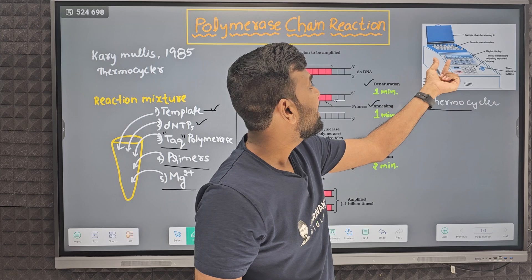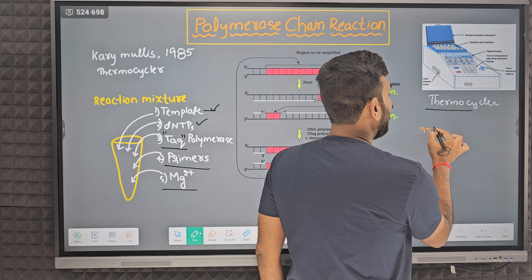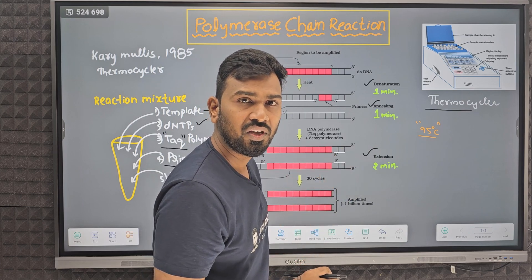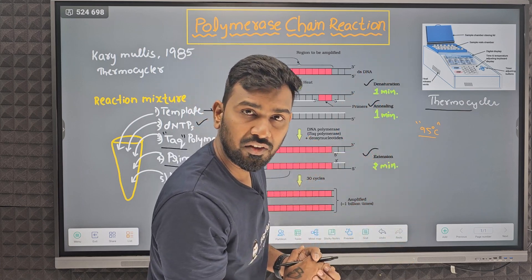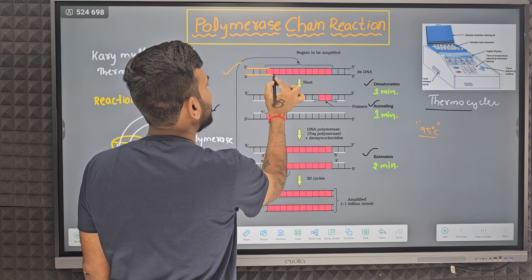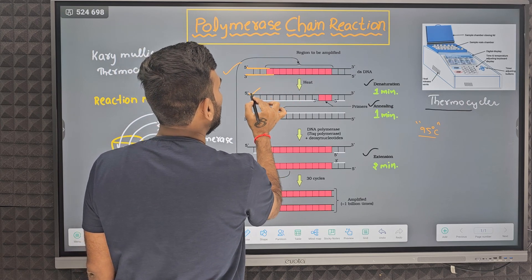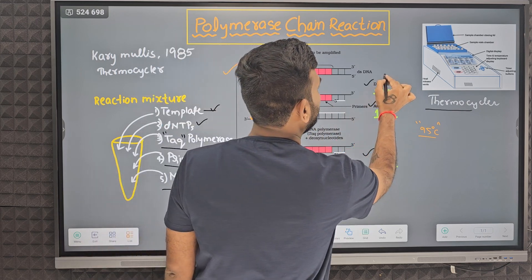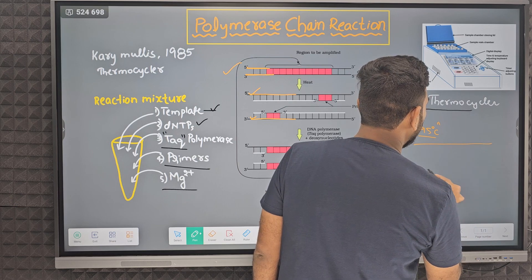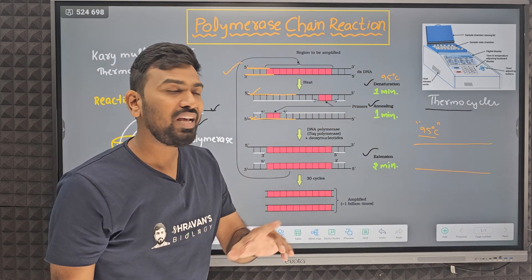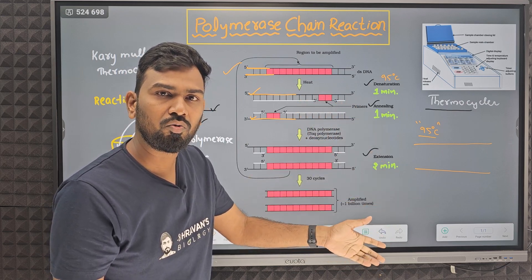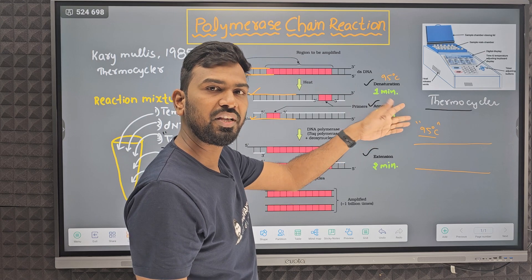1st step — Denaturation. In this machine we will set the temperature to 95 degrees Celsius. The machine temperature becomes 95°C. The DNA template that was added — the two strands of the DNA separate. At this very high temperature, denaturation occurs: both strands separate, hydrogen bonds break. So the two DNA strands become separated. This takes about 1 minute.